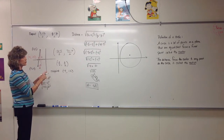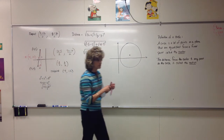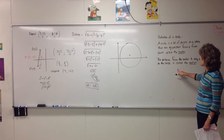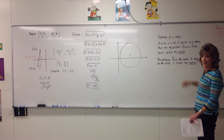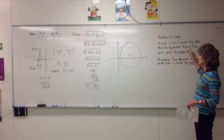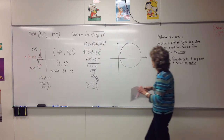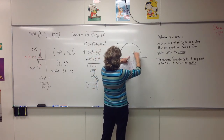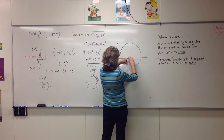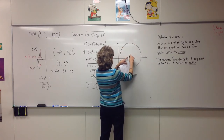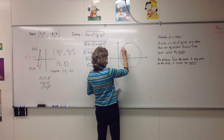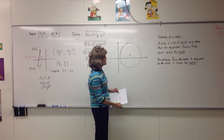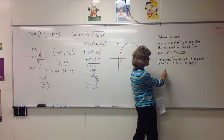So two formulas you need to be familiar with: midpoint and distance. You also need to know the definition of a circle — write this in your notes. A circle is a set of points in a plane, and all of these points are equidistant — the same distance from a fixed point called the center. The distance from the center to any point on the circle is called the radius.